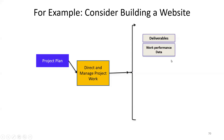We gather work performance data: how many test cases passed, who is a good performer, what got delayed, what got done faster, which estimates were right, how many defects there are, whether we had proper acceptance criteria, and whether stories were detailed properly. A lot of work performance data is collected, captured in check sheets, to understand the kind of work happening.